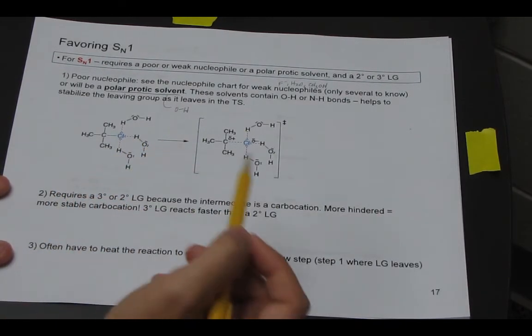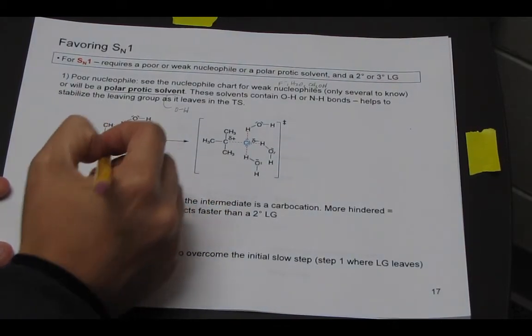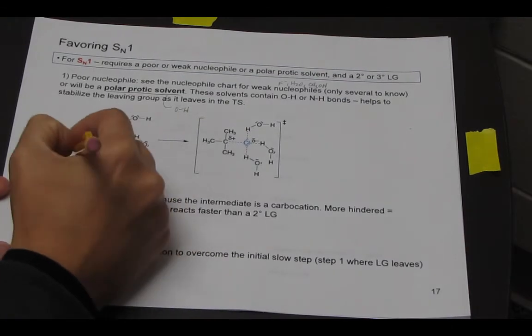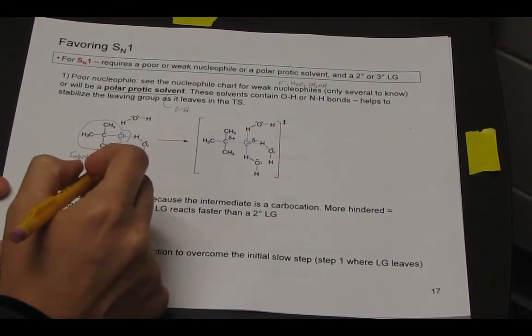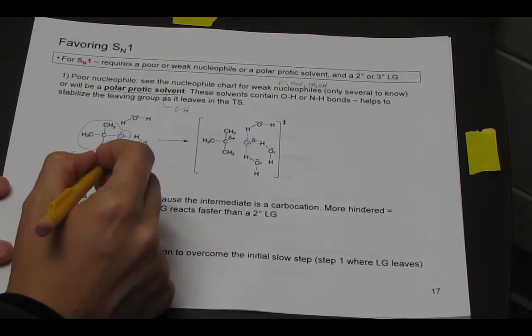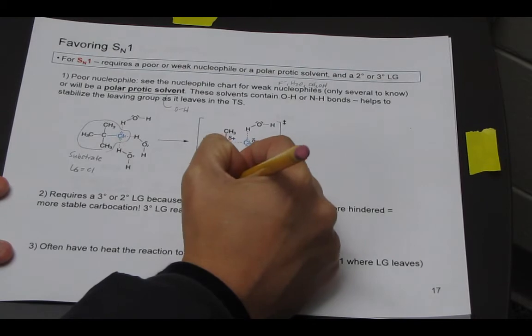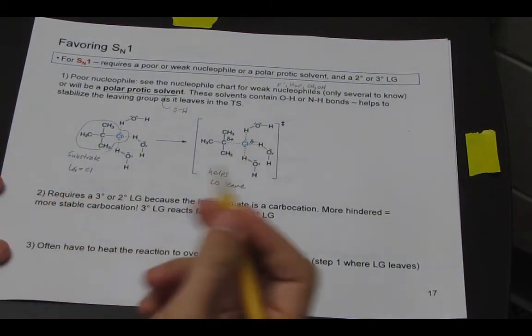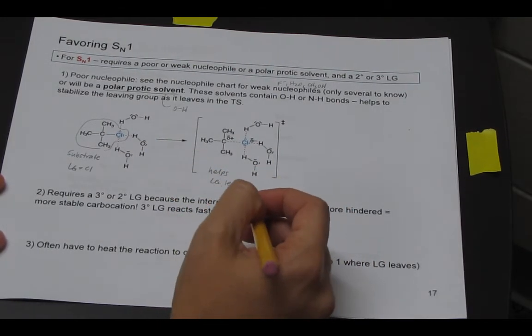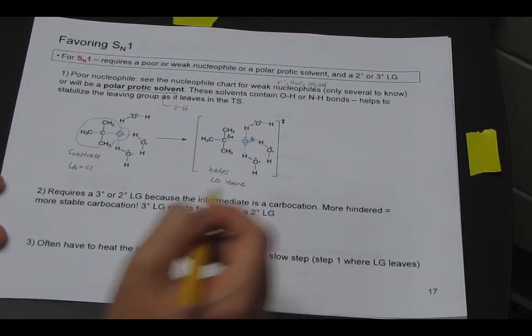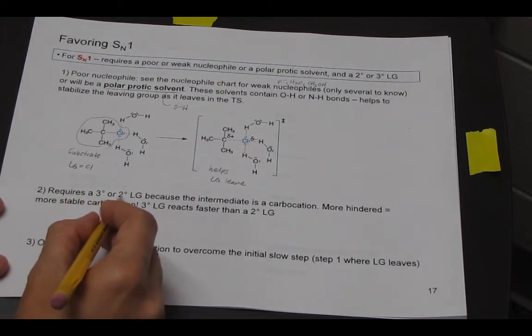So our polar protic solvents are going to have an OH. And remember that OH can hydrogen bond. We didn't want that for SN2, but we do for SN1. And if we focus on our substrate here, this is our substrate. And our leaving group is chlorine. And so the water, or our solvent, can help the leaving group leave. And that's a good match for SN1. What I just started with today is we want the leaving group to leave to form the carbocation. And if we can speed that up, we'll have a better SN1 reaction.